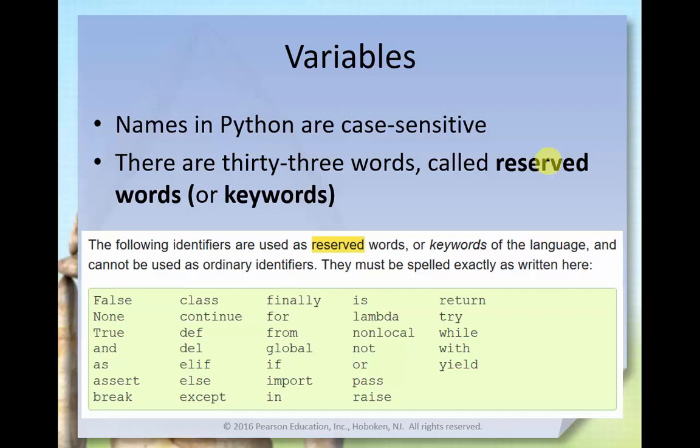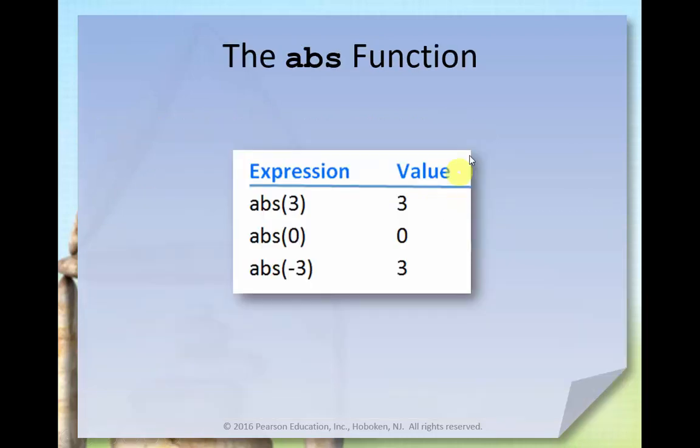And there are also certain reserved words in any programming language that you may not use for your names of your variables. This is a listing here of some 33 different reserved words within Python that you may not use. So for instance, you may not set up a variable called try. Most of these are not ones you'll bump into, but occasionally. Just be aware that there are reserved words.